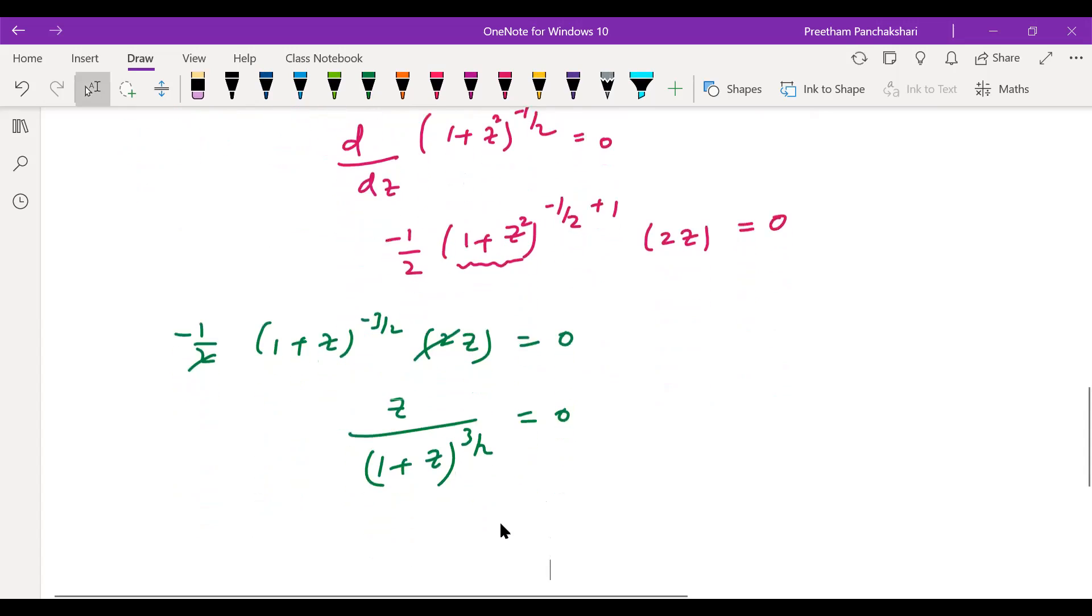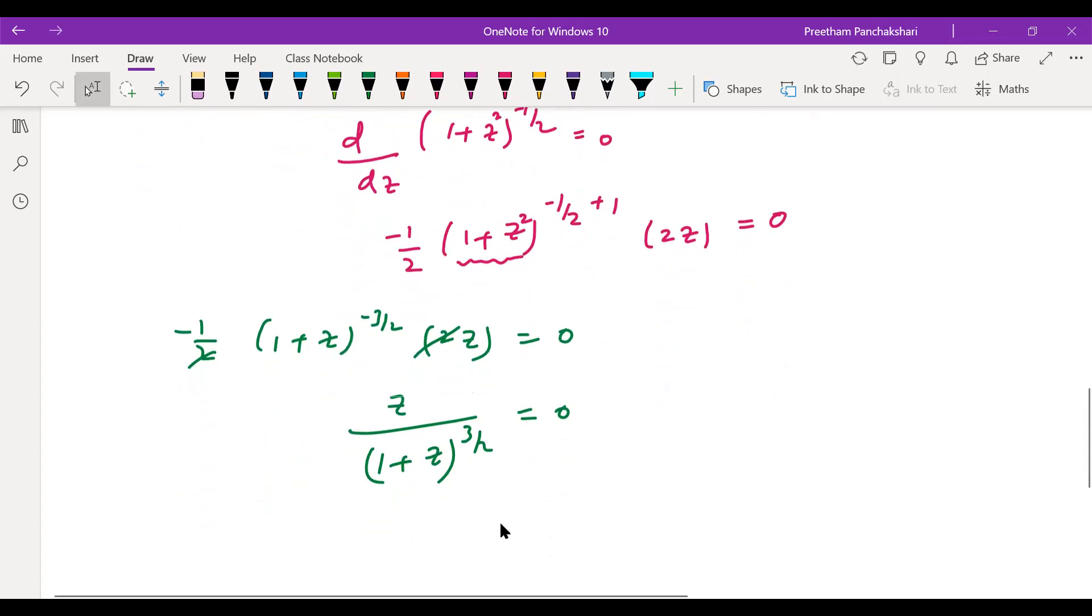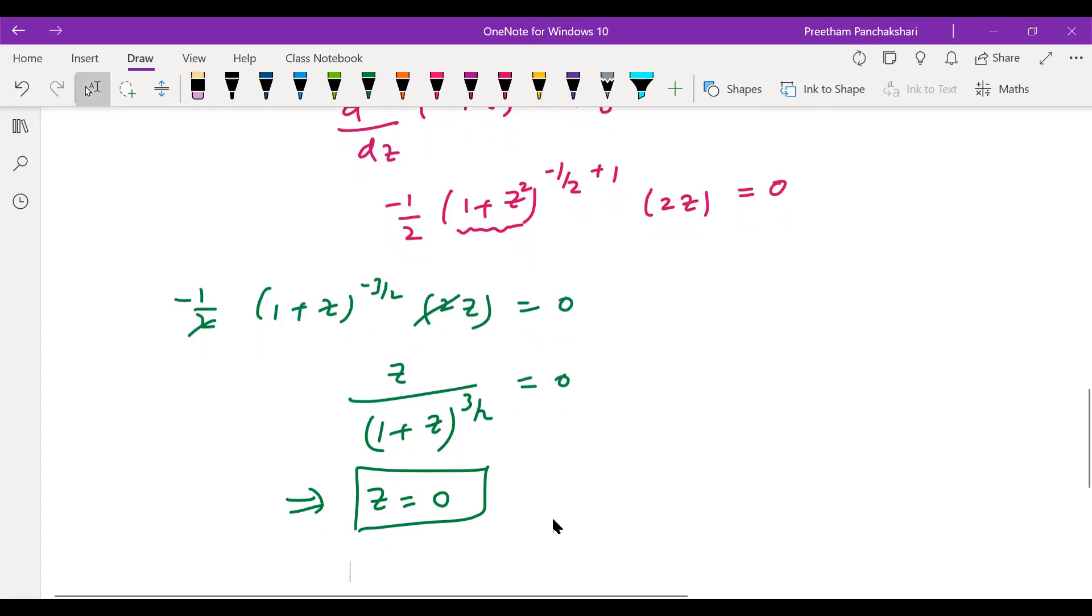Now this expression becomes z divided by (1 plus z square) power 3 by 2. So we have to choose the best value for z to make the RHS equal to 0. So on the left hand side that can be put 0. So by inspection, by looking at it you can know that just by putting z equal to 0, we can get 0 on the right hand side. So that's why z value is going to be 0. This is the condition for maximum value of the potential.